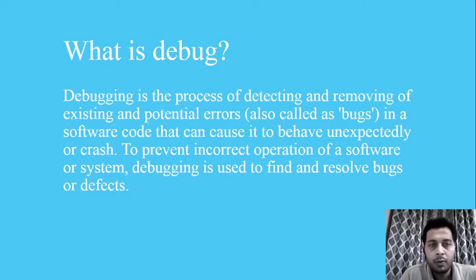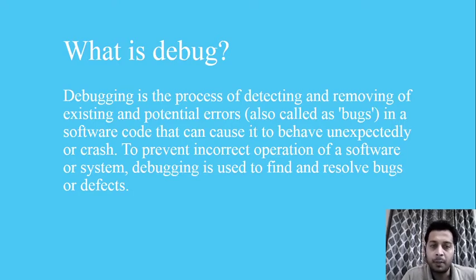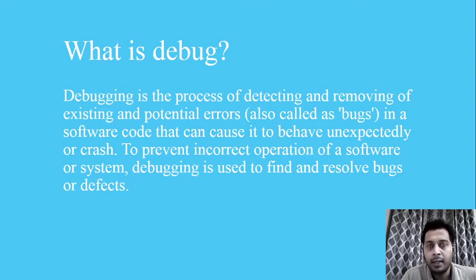So what is a debug? Debug is a process of detecting and removing existing and potential errors, also called bugs, in software code that can cause it to behave unexpectedly or crash. To prevent incorrect operation of a software or system, debugging is used to find and solve bugs or defects. If you design a program and do unit testing and find some errors, you need to identify where the error is and what the error is.